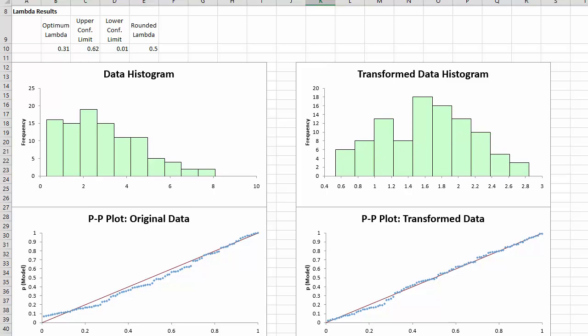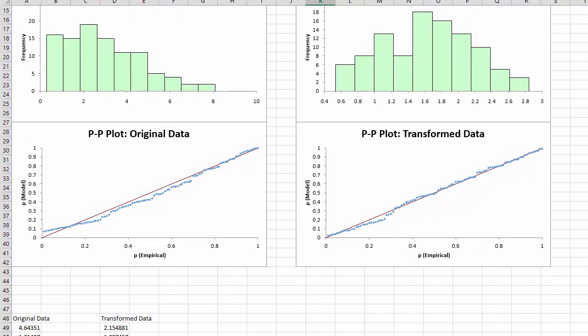And then the other plots are the probability-probability plots, where you're plotting the empirical CDF versus the model or the normal distribution CDF. And if it fits a normal distribution, it should lie along a straight line. And you can see that the transformed data does a better job of lying along the straight line than the original data does.